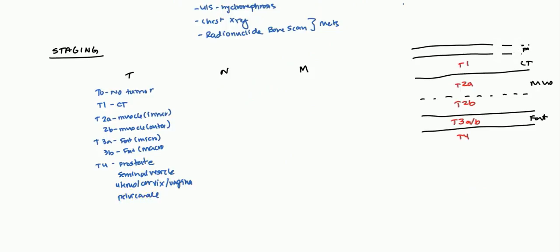Now this T staging system is divided into two groups based on the muscle. Between T1 and T2A anything below that we call it muscle invasive and above that we call it non-muscle invasive and this is important for the treatment as we'll go into a little bit. So that is your T which is again about the size and invasion of the actual tumor.